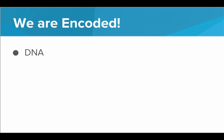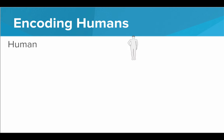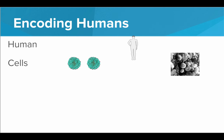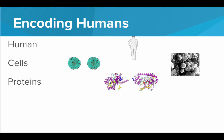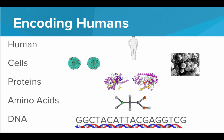It turns out humans are encoded as well. Every human has DNA that spells out the exact instructions for making every type of protein in your body. A human can be broken down into several cells, and each of these cells has its own proteins. Each protein is made up of a series of amino acids, and the exact sequence of amino acids that go into making a specific protein is encoded using DNA. We can think of DNA as just a long string of characters, and the only characters we can choose from are G, C, T, and A. So this long string of G, C, T's, and A's actually encodes the instructions for building our entire body.